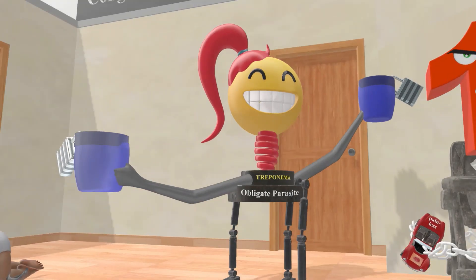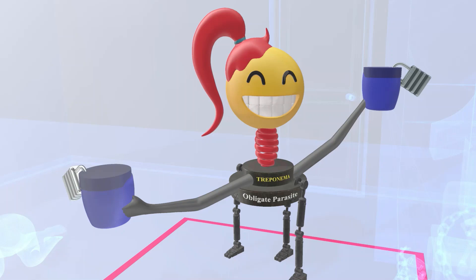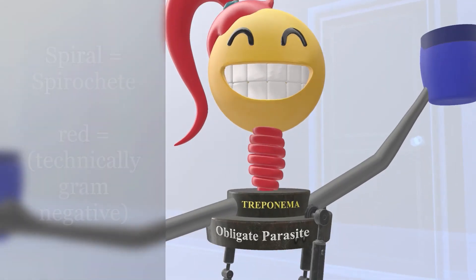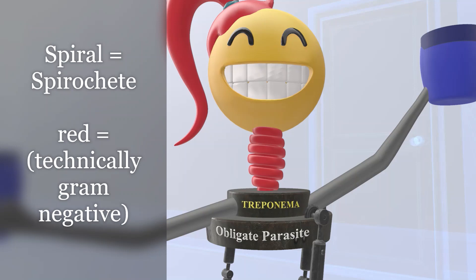Before talking about acquired and congenital syphilis, let's look at this mother. On her body it says 'obligate parasite', to ingrain that Treponema pallidum is an obligate parasite requiring a human host to survive. Her neck is spiral-shaped, because Treponema pallidum is one of the spirochetes — long, thin organisms with endoflagella giving them motility. It's shown in red because Treponema pallidum is technically gram-negative, but since its envelope is too thin to visualize under light microscopy, it's not always categorized as a gram-negative bacterium.